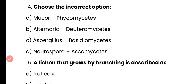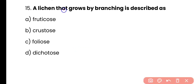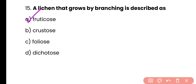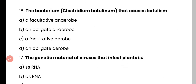Question number 15. A lichen that grows by branching is described as: fruticose lichen, crustose lichen, foliose lichen, or decottose lichen? Correct answer is option A. Fruticose lichens grow by branching.